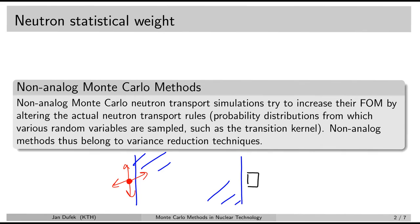So how can we possibly solve this problem? One of the solutions is to change the sampling rules for the neutron transport. For instance, we may decide that we will no longer simulate the absorption reaction. When we don't simulate the absorption reaction, then every collision will be scattering. So the neutron history may actually continue in the material and eventually the neutron may enter the volume of the detector. This method is called implicit capture and we are going to learn about it in detail in one of the next lessons.